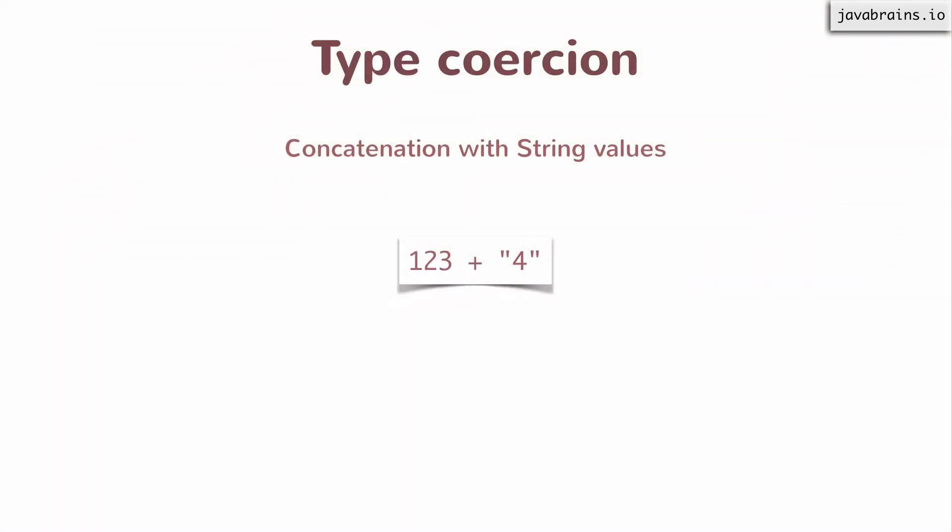A standard example is concatenation with string values. Let's say you have something like 123 plus the string 4. As you would expect, the value will be the string 1234. What the interpreter does is it looks at the first value, which is a number, and it's added to the second value, which is a string — it obviously cannot work. So at least one of those two values has to be converted to the same type. What the JavaScript interpreter does is it takes the number and converts it to a string, so 123 becomes the string 123, and then it appends 4 to it, giving you 1234 as a string.